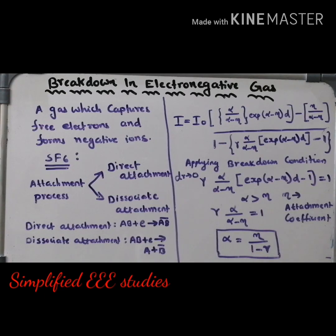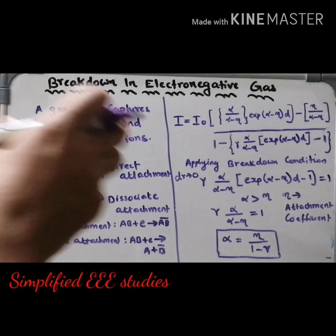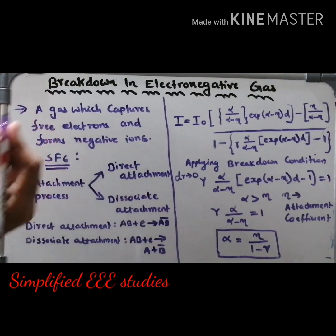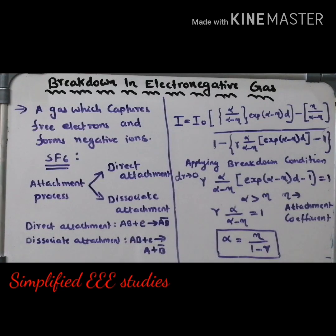So that is a summary of the class. This is a simple derivation that will be asked in some university examinations, especially Visvesvaraya Technological University. They will directly ask: derive an expression for breakdown of electronegative gas. They may also ask: write a brief note on electronegative gas — then you can explain the definition, that is, a gas which captures free electrons and forms negative ions. A best example is sulfur hexafluoride, and its application is in circuit breakers.